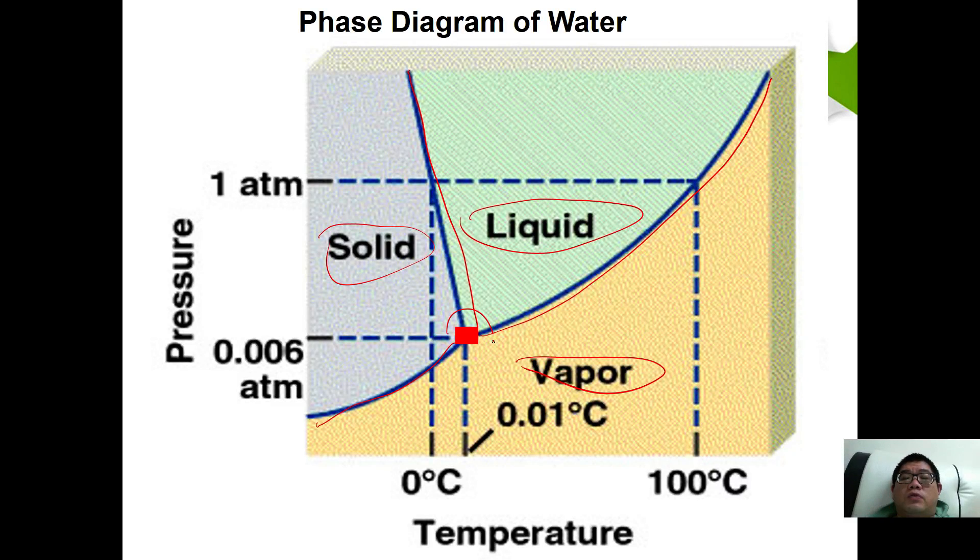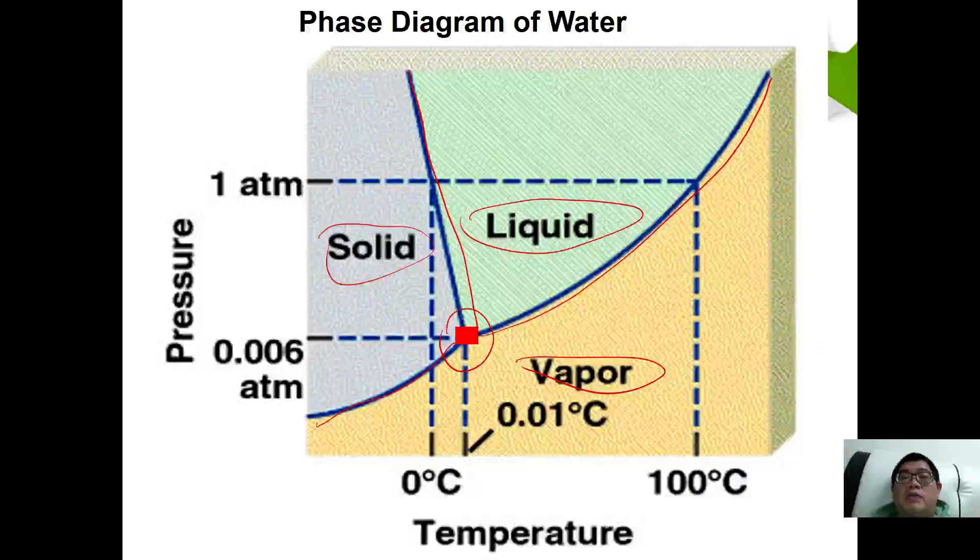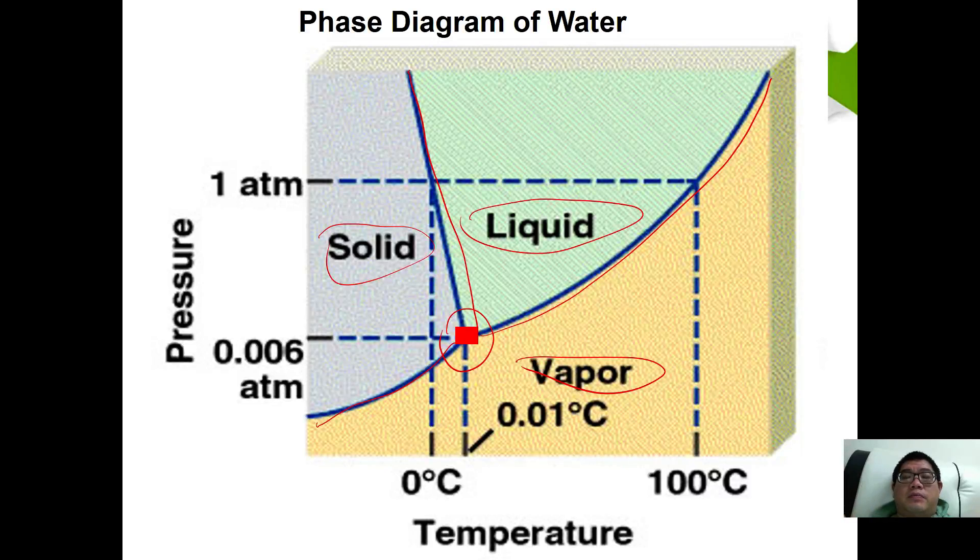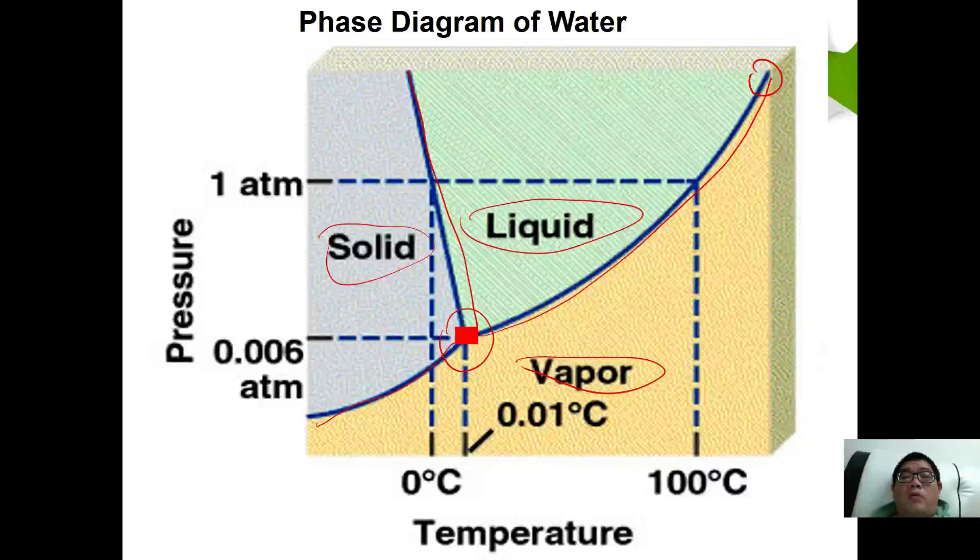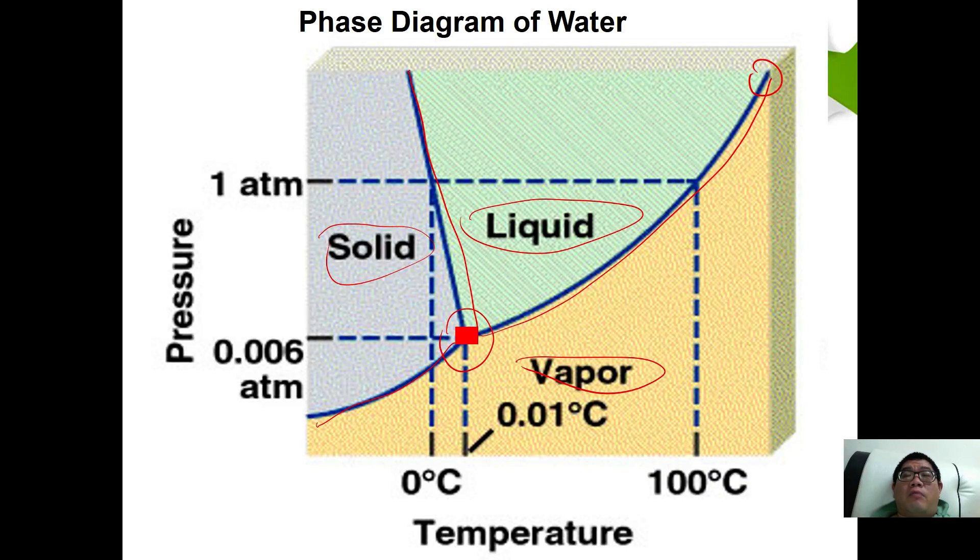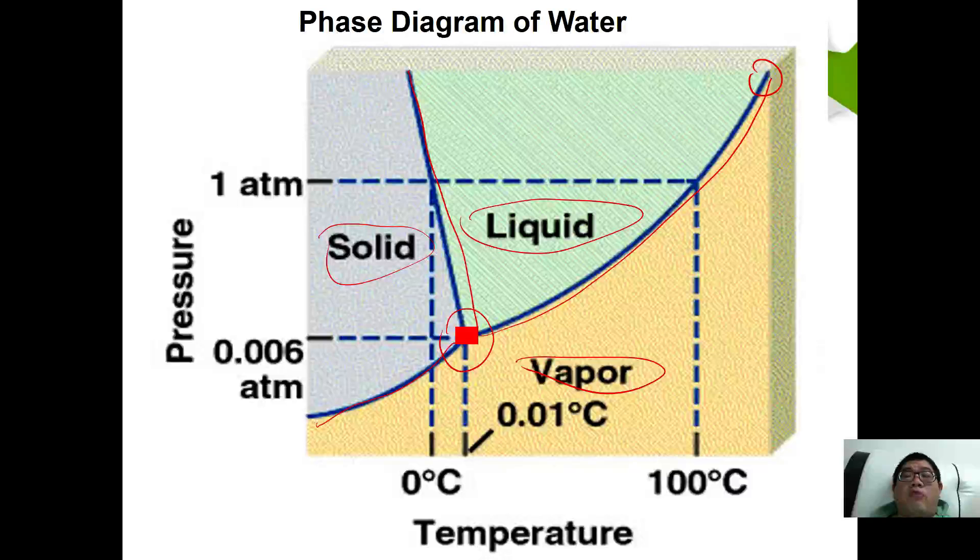This point is also known as the triple point, where solid, liquid, and vapor coexist together. Whereas here, this is what we call the critical point. At the critical point, when any substance goes beyond critical point, the gas can no longer be compressed back to become liquid. Therefore, it will remain as a gas forever.